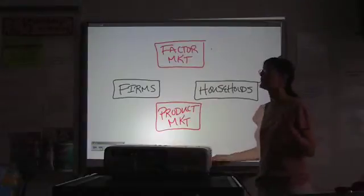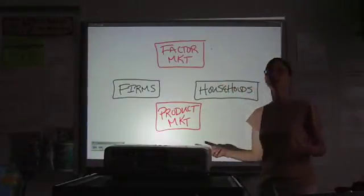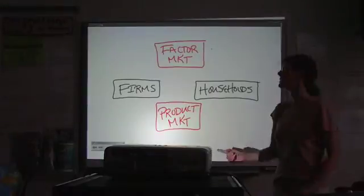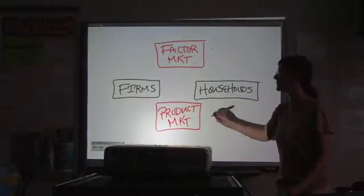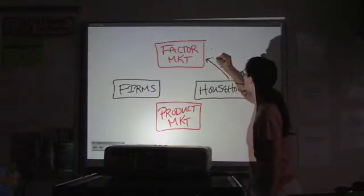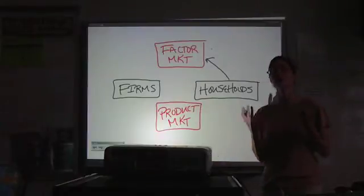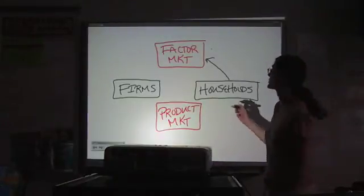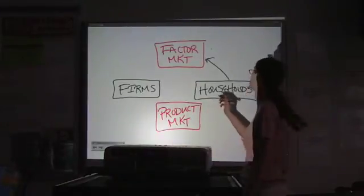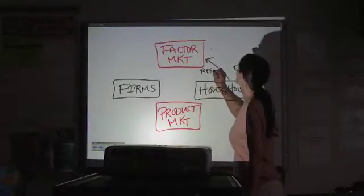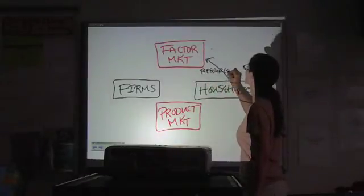Now, if the household is the economic unit that provides resources, then that's what they're putting into the factor market. So again, we can call those factors of production, or we can call them resources. Those two terms are interchangeable. So that's our first arrow.